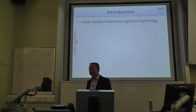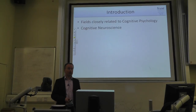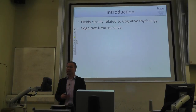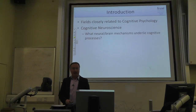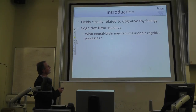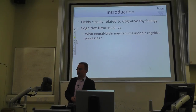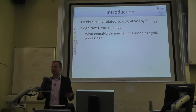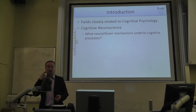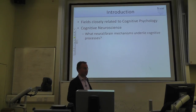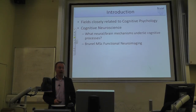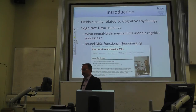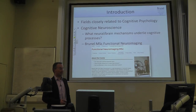There are several fields closely related to cognitive psychology. First is cognitive neuroscience, which asks what neural or brain mechanisms underlie cognitive processes. On the most basic level, we ask which brain area is responsible for language or visual perception. At Brunel, there is a master program in functional neuroimaging for those interested in that area. Methods include fMRI, which uses strong magnetic fields to visualize neural activity.